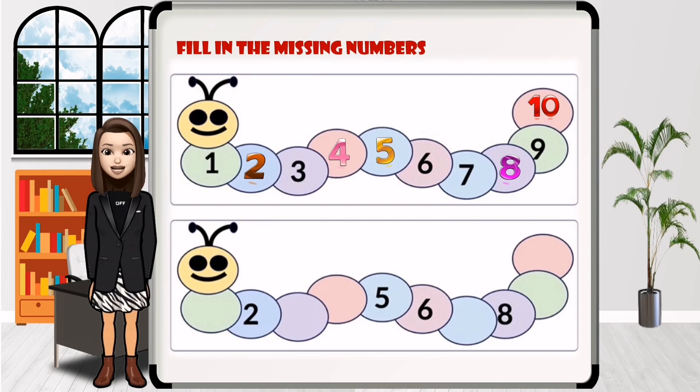Let's go to the second worm. What's the missing number here? One. Good job! And then, two.